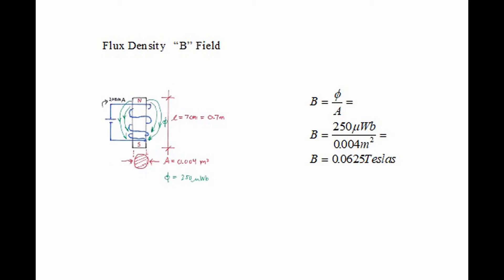The flux density describes how well the lines of force are packed together and it's called the B field. We can calculate the flux density B by saying B equals flux divided by area. In this case, 250 microwebers divided by 0.004 square meters equals 0.0625 Teslas. We could have said webers per square meter but we call them Teslas in honor of Nikola Tesla.